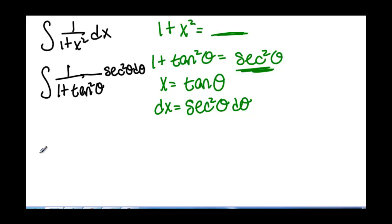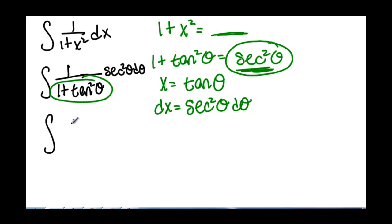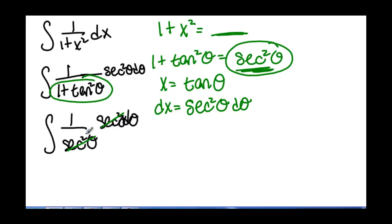We can't forget that 1 plus tangent squared of theta equals secant squared of theta. So we really have the integral of 1 over secant squared of theta, times secant squared of theta d theta. Our secant squared terms cancel, leaving us with the integral of d theta.